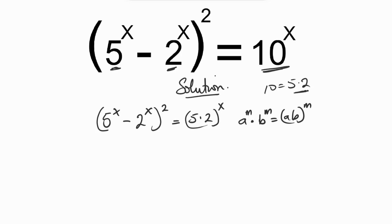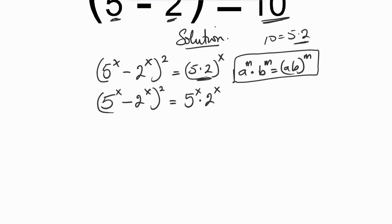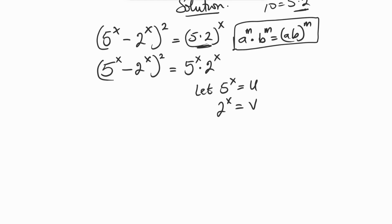So let's rewrite 5 times 2 in that formula format. We have 5 raised to the power x minus 2 raised to the power x, all squared, equals 5 raised to the power x times 2 raised to the power x. Now let's represent 5^x as u and 2^x as v, both in the parenthesis and on the right-hand side.